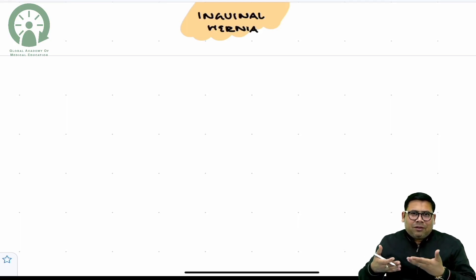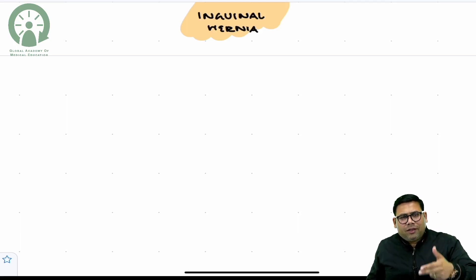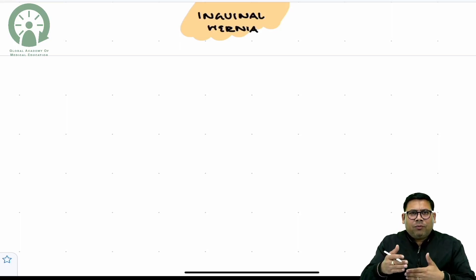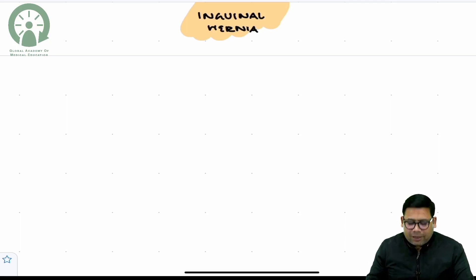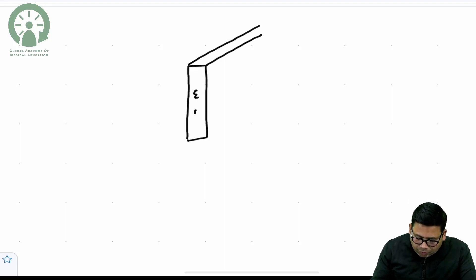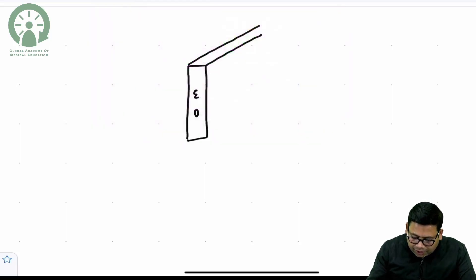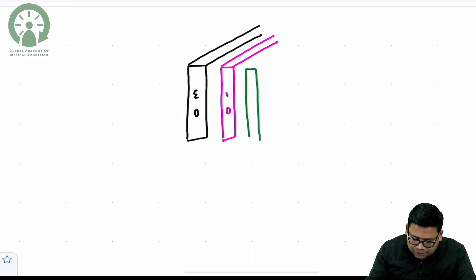When we transit from the abdominal wall to the groin, you have to understand there are three important muscle layers of the abdominal wall. From outermost: you have the external oblique, then the internal oblique, then the transversus abdominis. In a parasagittal view, we can see the external oblique muscle, the internal oblique, and the transversus abdominis.